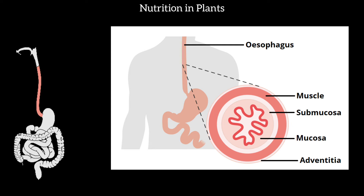But sometimes when we vomit, the food comes back up. This happens because our stomach does not accept the food — it may be due to bacteria or bad food. In that case, the stomach sends the food back out through the esophagus.